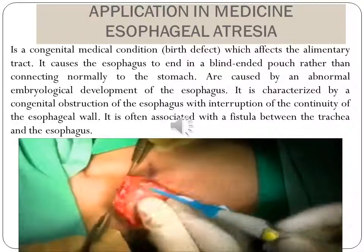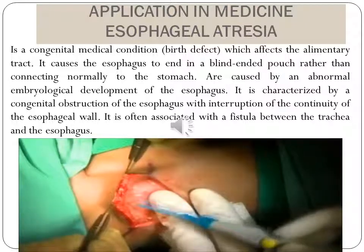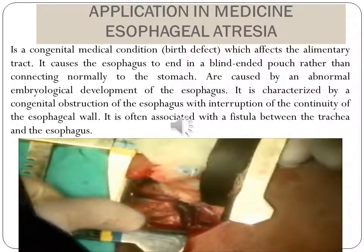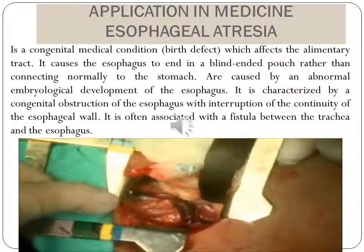Esophageal atresia is a congenital birth defect that causes the esophagus to develop abnormally. When this happens, the upper esophagus does not connect with the lower esophagus and stomach. It is a congenital condition which affects the alimentary tract, causing the esophagus to end in a blind pouch rather than connecting normally to the stomach. It is caused by abnormal biological development of the esophagus.